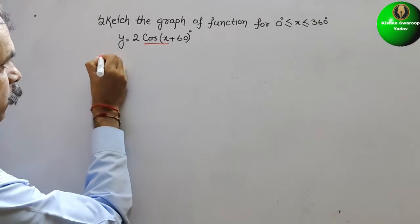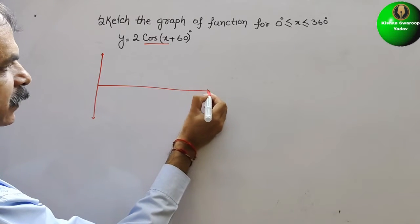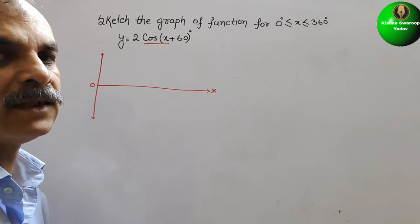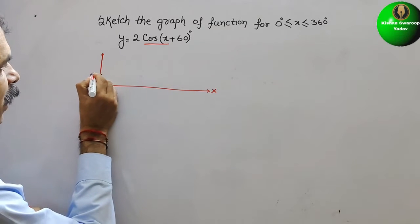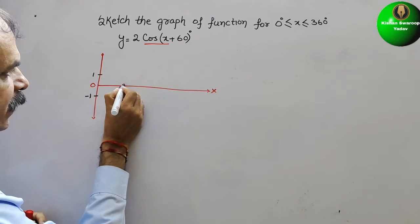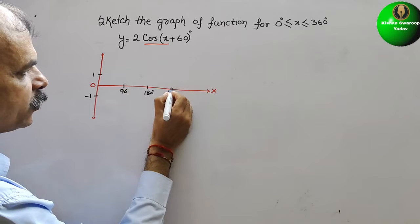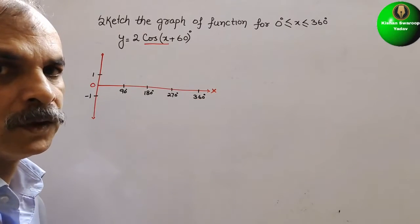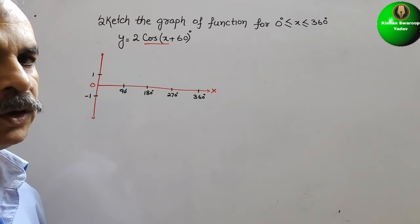We make the x-axis and y-axis. On the y-axis we mark the amplitude: 1 and minus 1. On the x-axis we mark 90°, then 180°, then 270°, and then 360°. Now we are making cos x first, and then we will do what they have told.